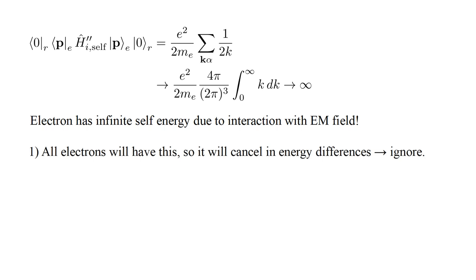As Bethe noted, physicists generally ignore this. The argument being that all electrons will have this additional infinite energy, so it will cancel when energy differences are calculated. And we can only observe energy differences, not absolute energies. This is the same argument we used previously to ignore the infinite zero-point energy of the photon field.